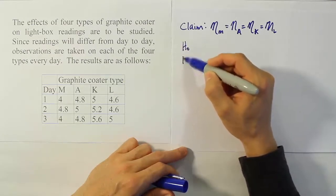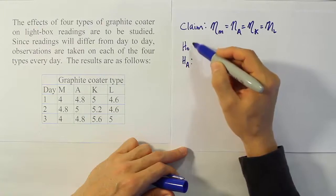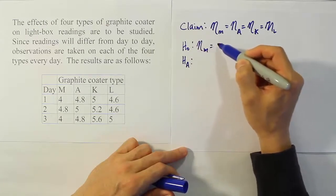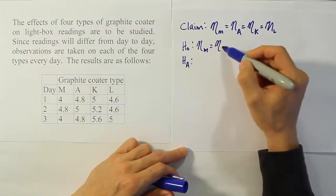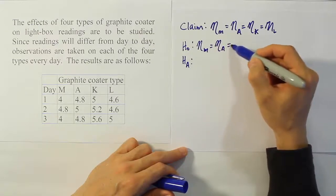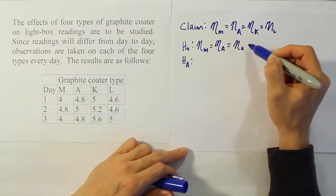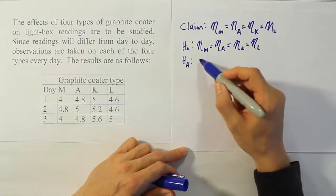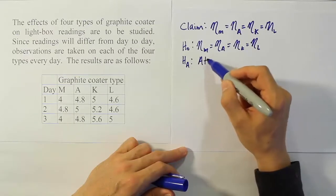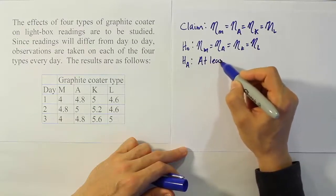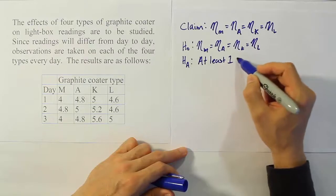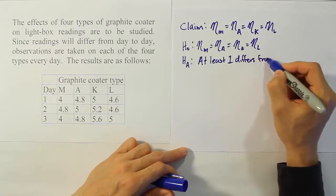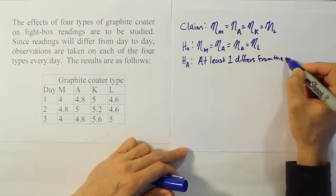So now let's look at H0 and HA. Now for H0, of course, it'll be the same as the claim because the claim has equality in it, and that's what the H0 always expresses, right? And then HA is that at least one differs from the rest significantly.